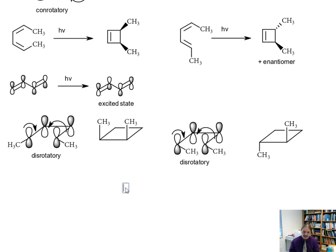To summarize this up, under photochemical conditions, if we have 4n electrons like we do in the butadiene case, we get disrotatory motion. And if we have 4n+2 electrons, we get conrotatory motion.